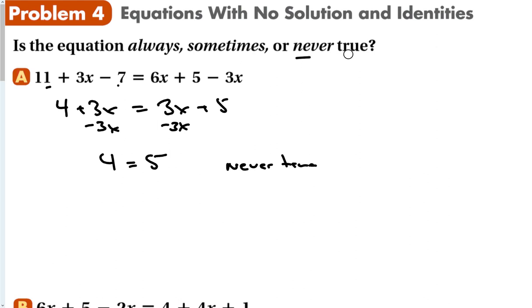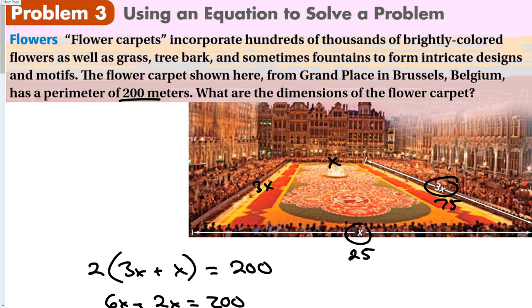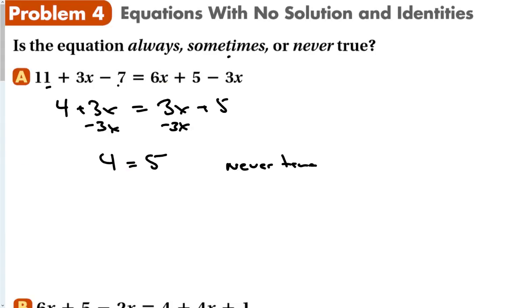So, the equation is never. If you had a 5 equal to 5, then it would always be true. Sometimes - this equation is sometimes true. It's true when y is equal to 6. It's not true any other time. It's only true for one specific number in this case. So when you look at these problems, always, sometimes, never true, if the variables all cancel out, it's either always or never true. If you get a solution, that's the sometimes true.